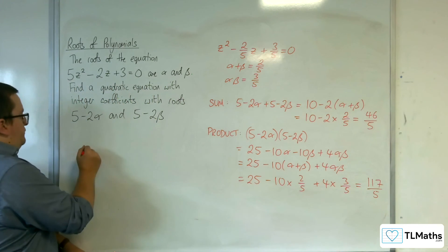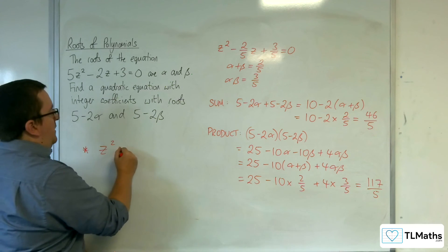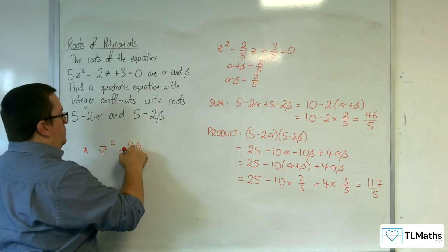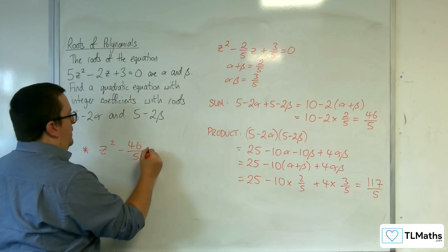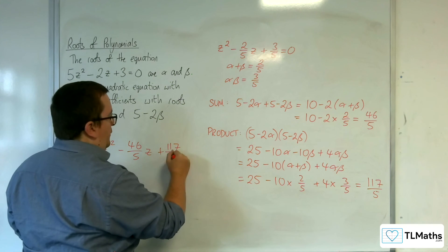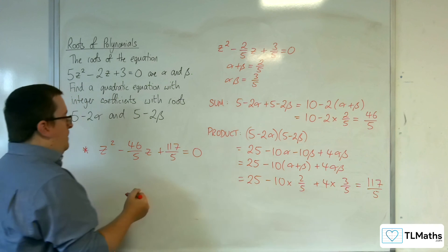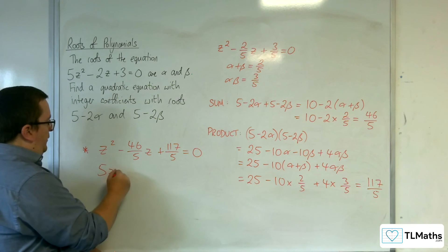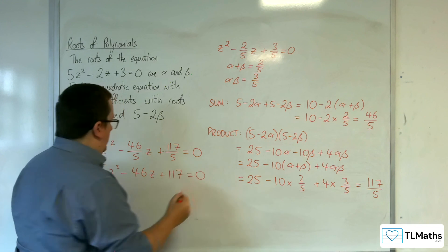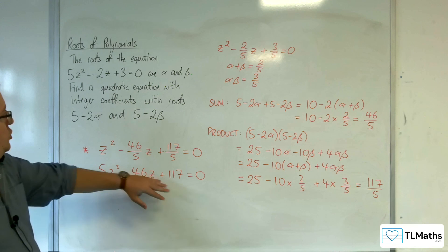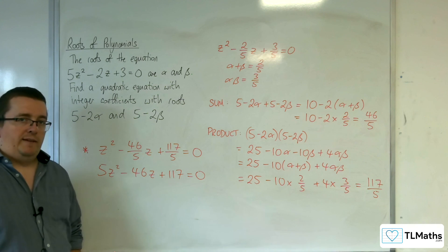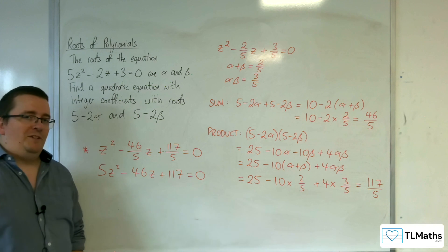So our equation will be z squared take away the sum of the roots, 46 over 5, z plus the product, 117 over 5 equals 0. Multiply through by 5 and we get 5z squared take away 46z plus 117 equals 0. And that is my quadratic equation with integer coefficients that has the roots 5 take away 2 alpha and 5 take away 2 beta.